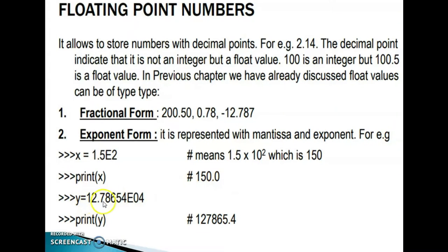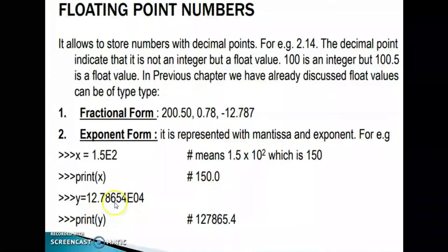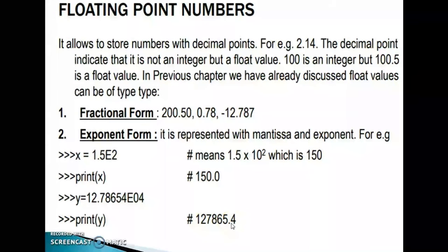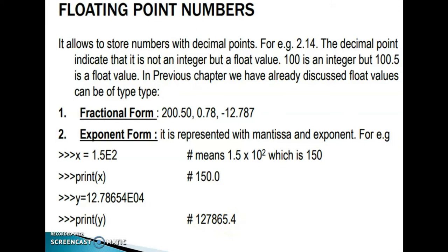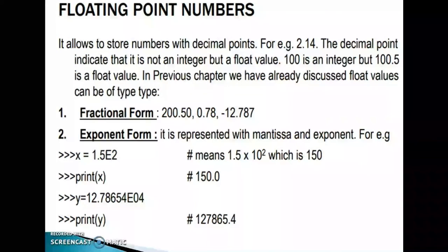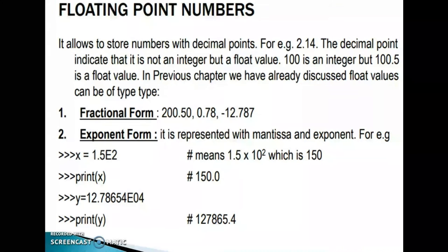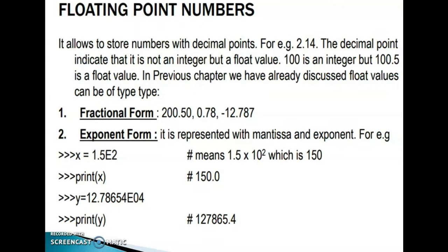Another example: y = 12.78654e04. Print y gives the corresponding number. This is the exponent form of floating point numbers, expressed as mantissa into 10 raised to the exponent.